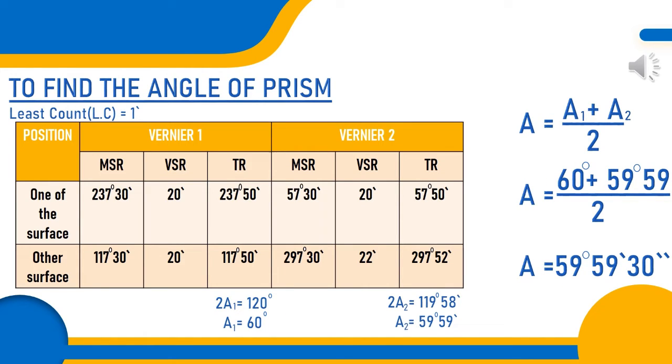The angle of prism is derived from the vernier readings by subtracting one set of readings from another set of readings.